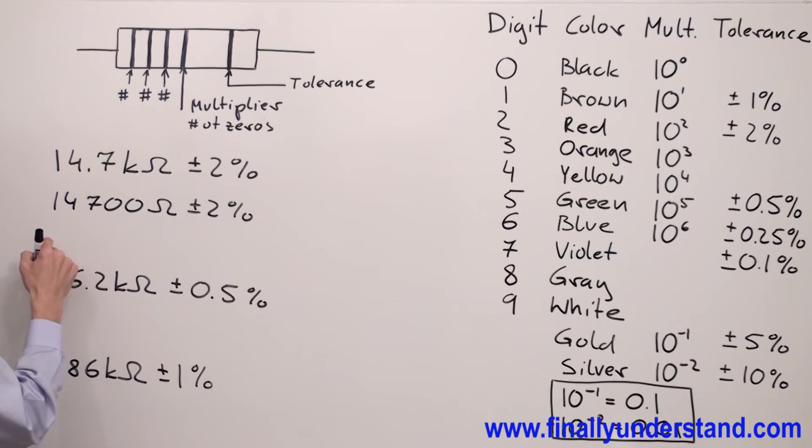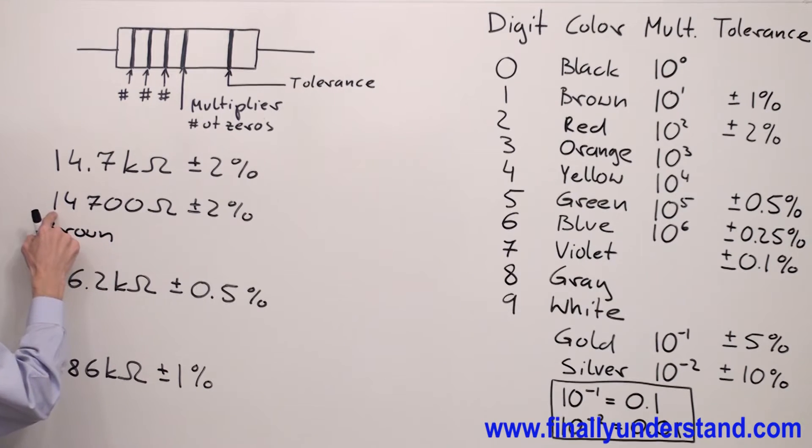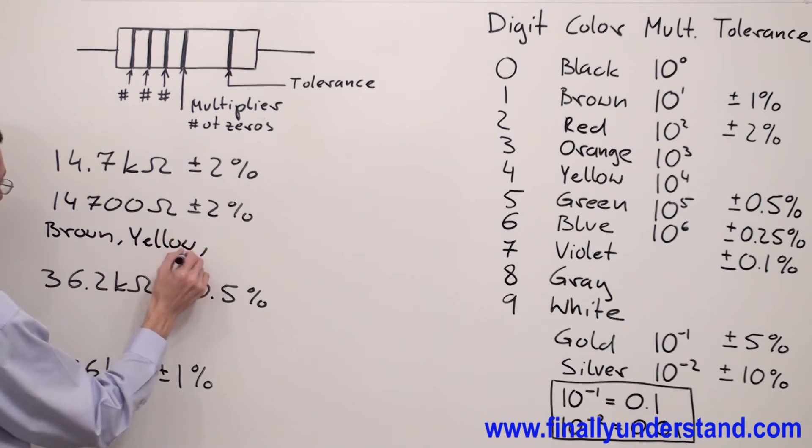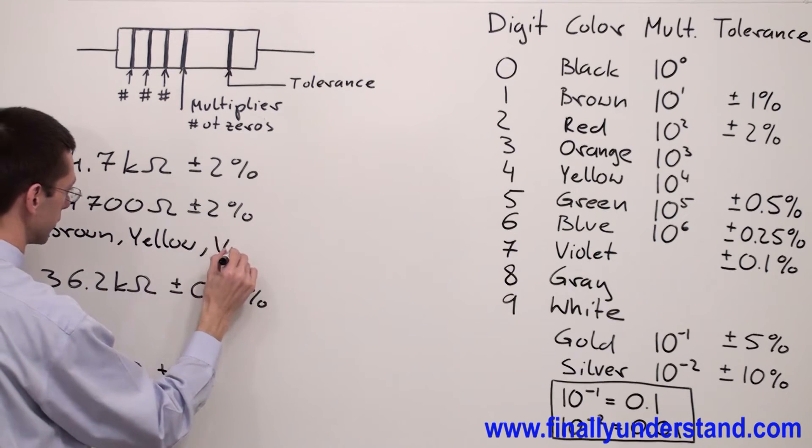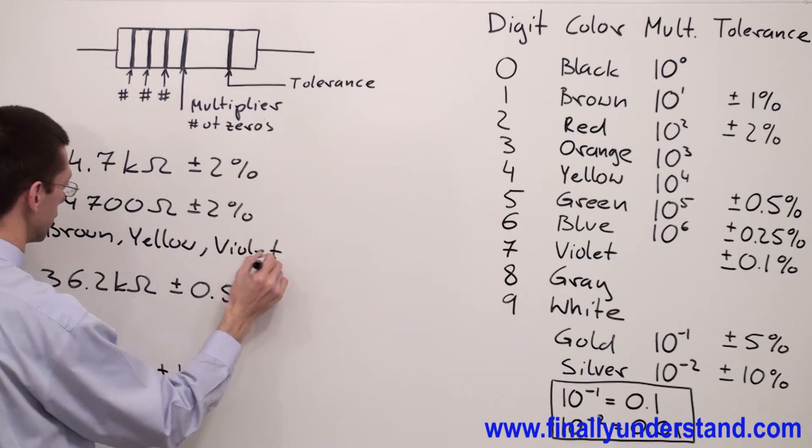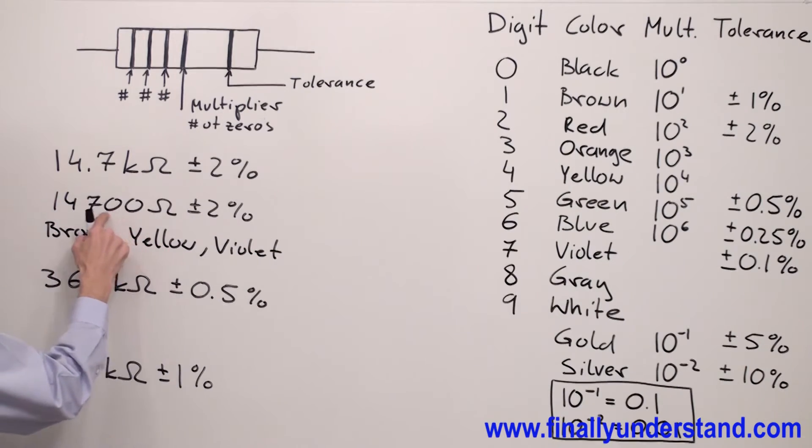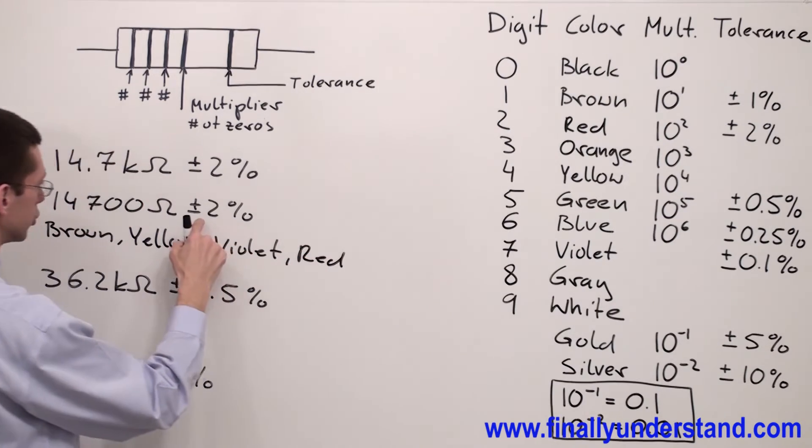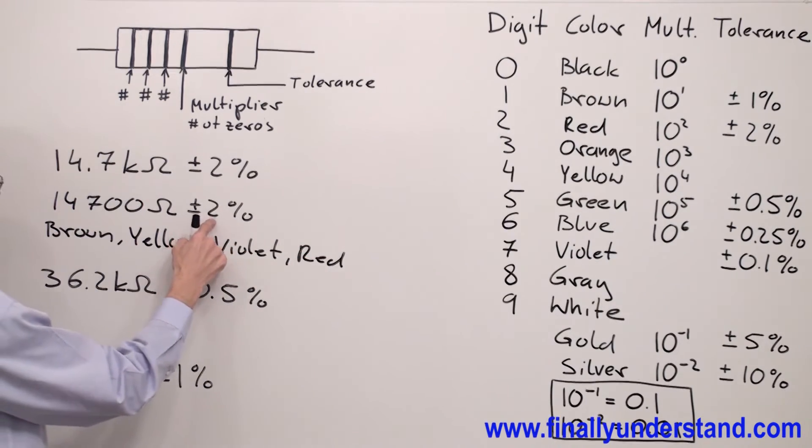My bands are going to be, first one is brown because one is represented by brown. Four is yellow. Seven, violet. How many zeros I have? I have two zeros. Red.